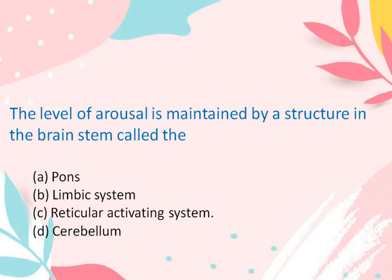The level of arousal is maintained by a structure in the brain stem called: Pons, Limbic System, Reticular Activating System, or Cerebral cortex. The correct answer is Reticular Activating System.